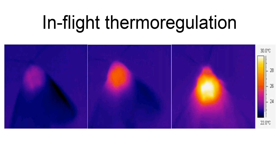Animal flight is a very energetically expensive form of locomotion that requires a high metabolic rate. In order for an animal to fly, its flight muscles need to be capable of high mechanical power output, which in turn, due to biochemical inefficiencies, end up producing large amounts of heat. A flying insect produces heat, which, as long as it does not exceed an upper lethal limit, will be tolerated.